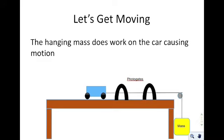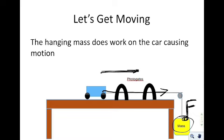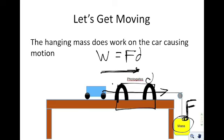Let's get moving. This is the experiment that you've already done. You put a hanging mass over the edge and had it pull the car through the gates. The purpose was to say: I'm applying a force — this thing is exerting a force, pulling the car with force F over a certain distance D between the photogates. You calculated the work being exerted on the car, and used the photogates to figure out what the velocity was at each gate.